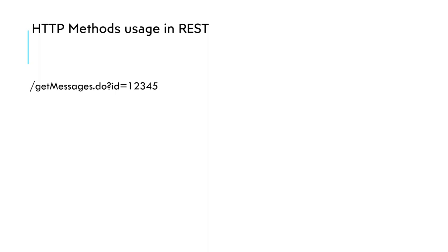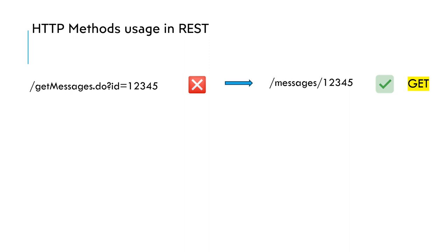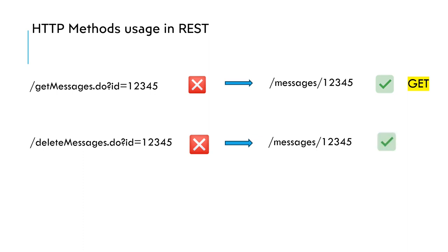Earlier we used to have action-based URIs like 'GET messages', where there is some action and then we pass the ID in a query parameter. But that's not the correct way in the REST world. We use resource URIs as we discussed. So if you want to get a message, you use the URI like /messages/12345 with the GET method. Similarly, if you want to delete a message, you use resource-based URIs with the DELETE method. This is the fundamental way we use REST URIs with their corresponding methods.